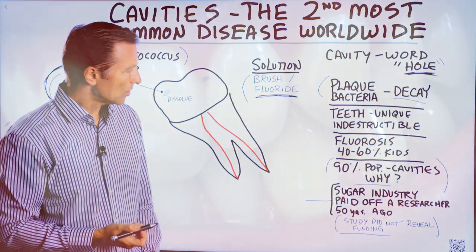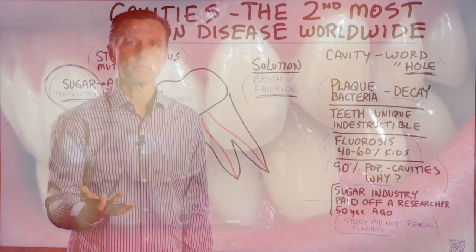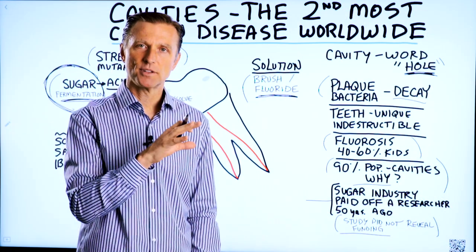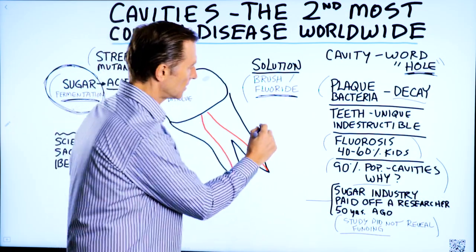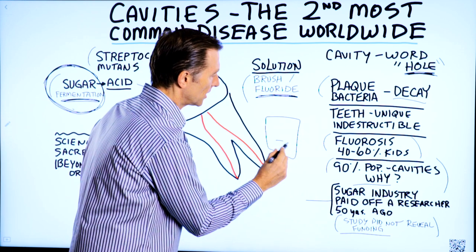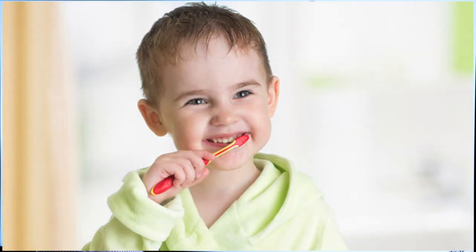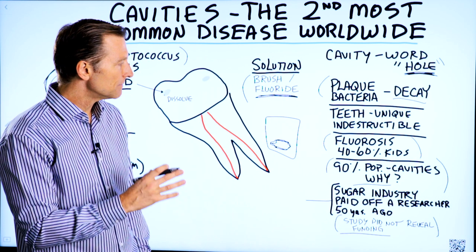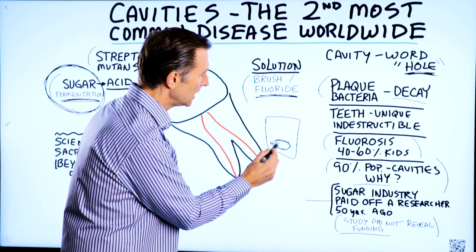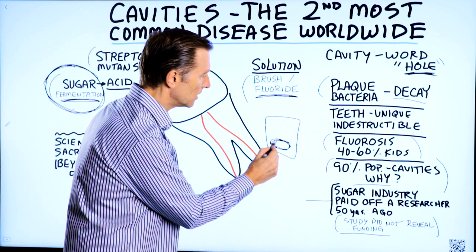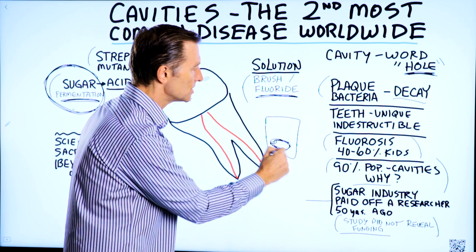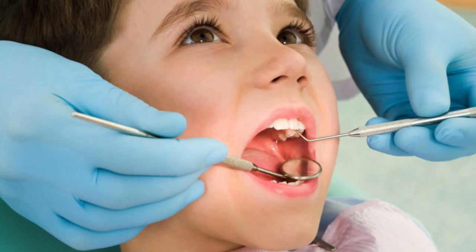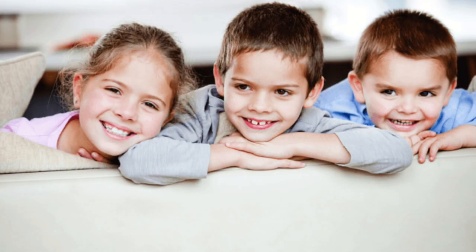We're still left with the idea that we just need to keep brushing and taking fluoride to prevent cavities, when it's not working. In fact, there's a condition called fluorosis — if you look it up, it's described as a cosmetic problem where part of the tooth turns excessively white, like a bleaching effect. The truth is that when you expose a young child to too much fluoride, it can weaken the teeth and affect calcium metabolism in your body. The whole tooth becomes weak, and apparently 40 to 60% of children actually have that condition.